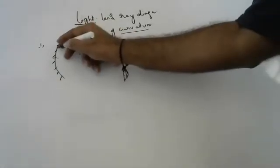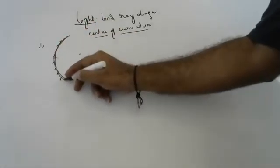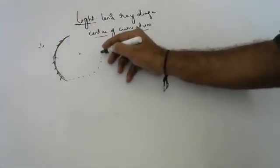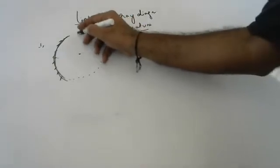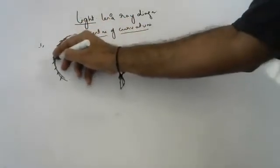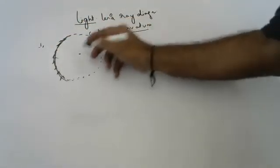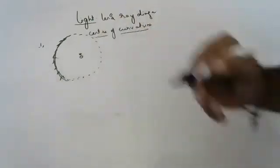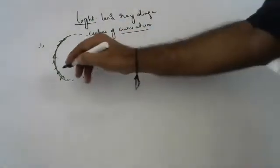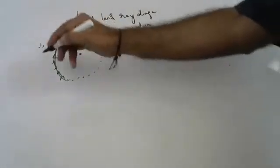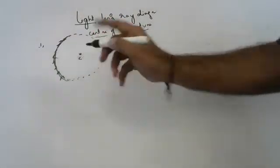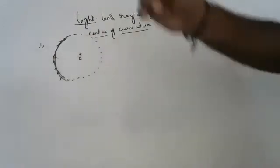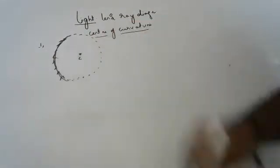This is a curve. If you complete this curve as a circle, it will have one center. That center is called the center of curvature.